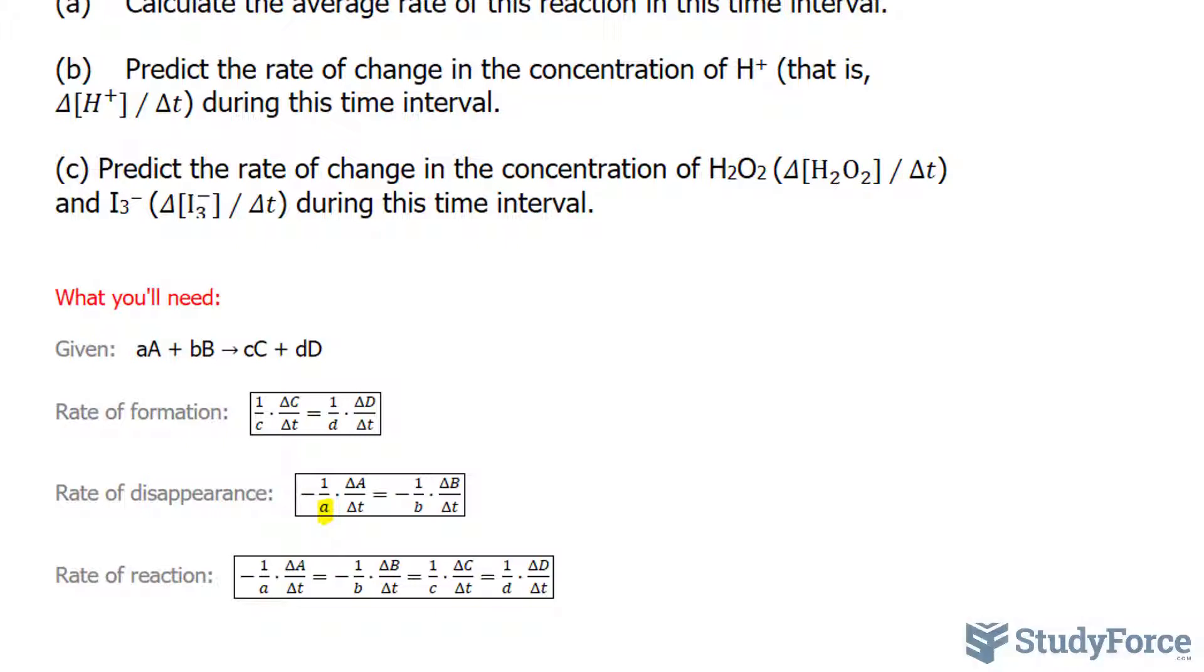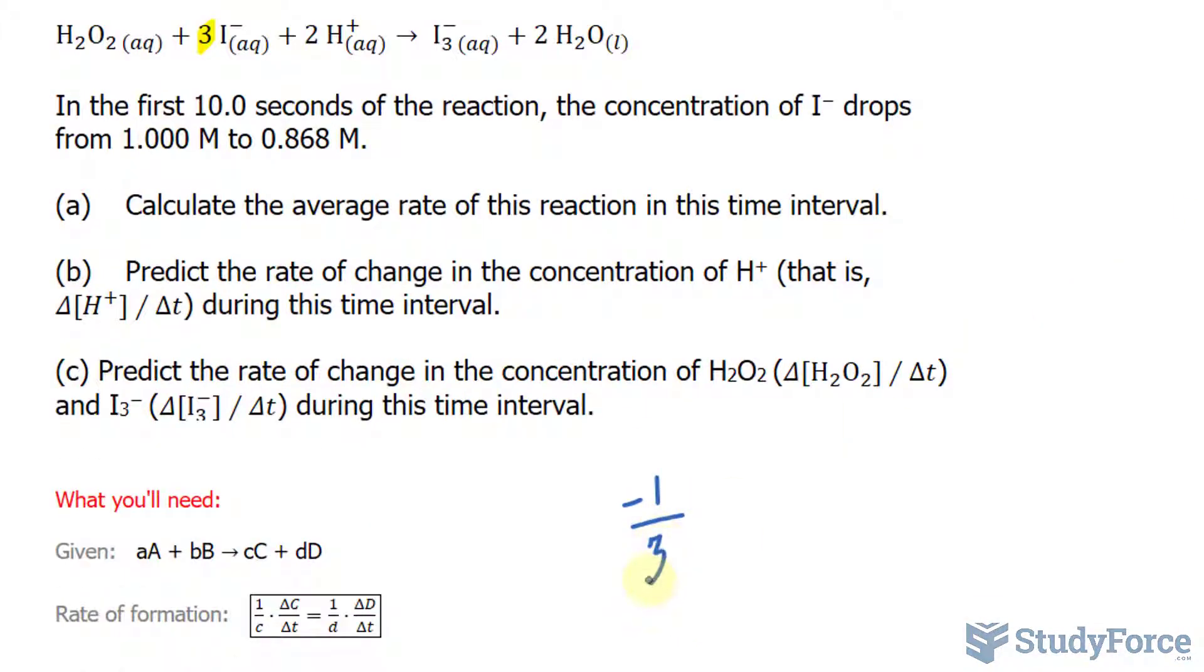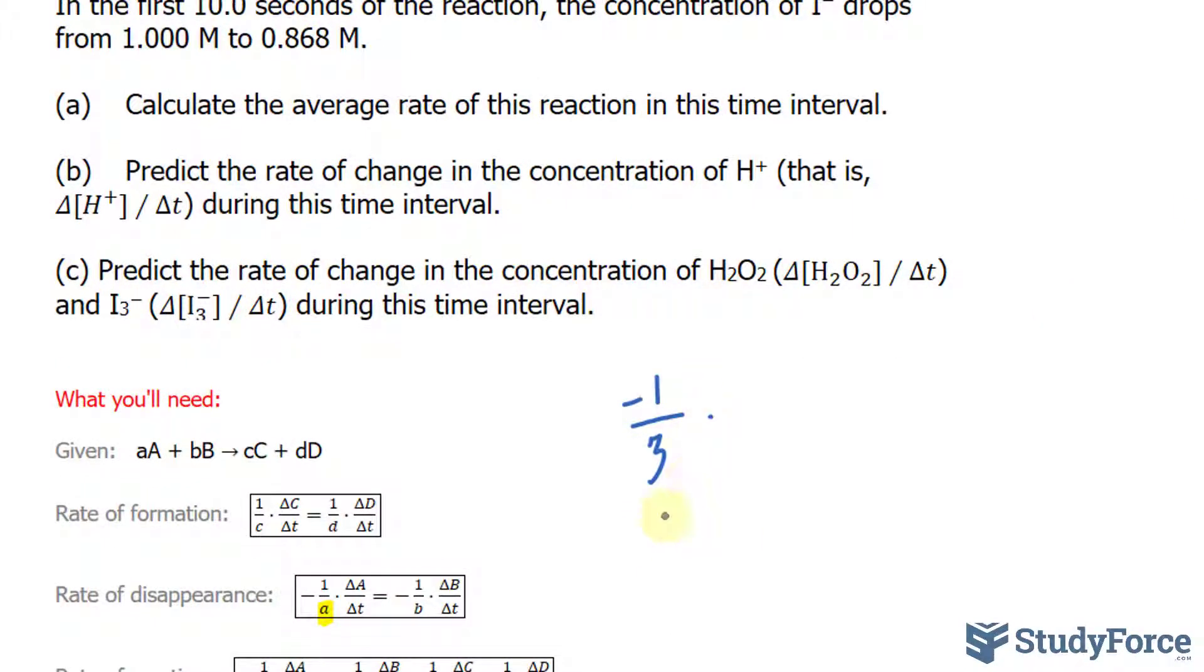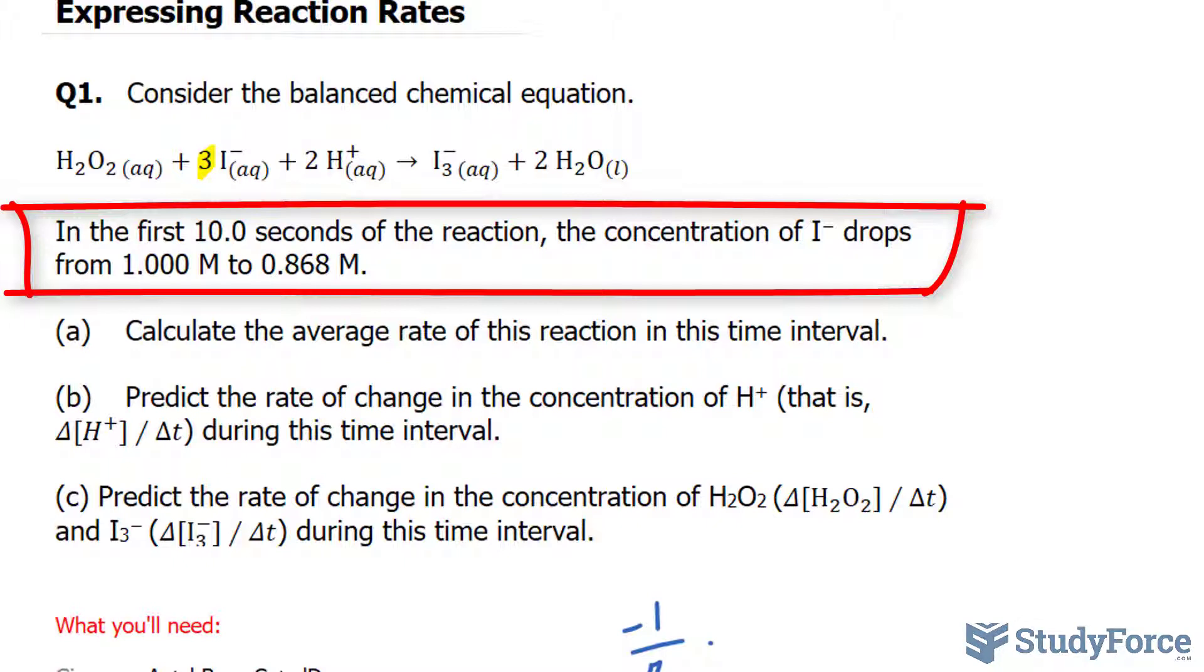If that's confusing to you, here's what I mean. So to calculate the rate of disappearance, or the average rate, for this molecule, we'll take negative 1 over the number of moles of that molecule, which is 3, and we'll multiply it to the change in molarity that's given in the question. We go from 1 to 0.868.